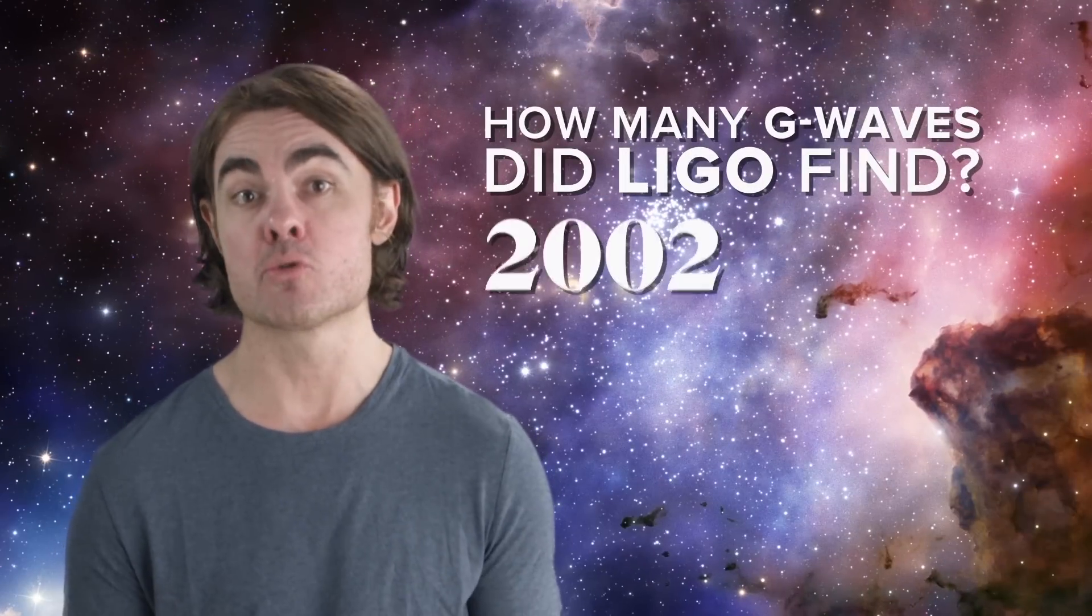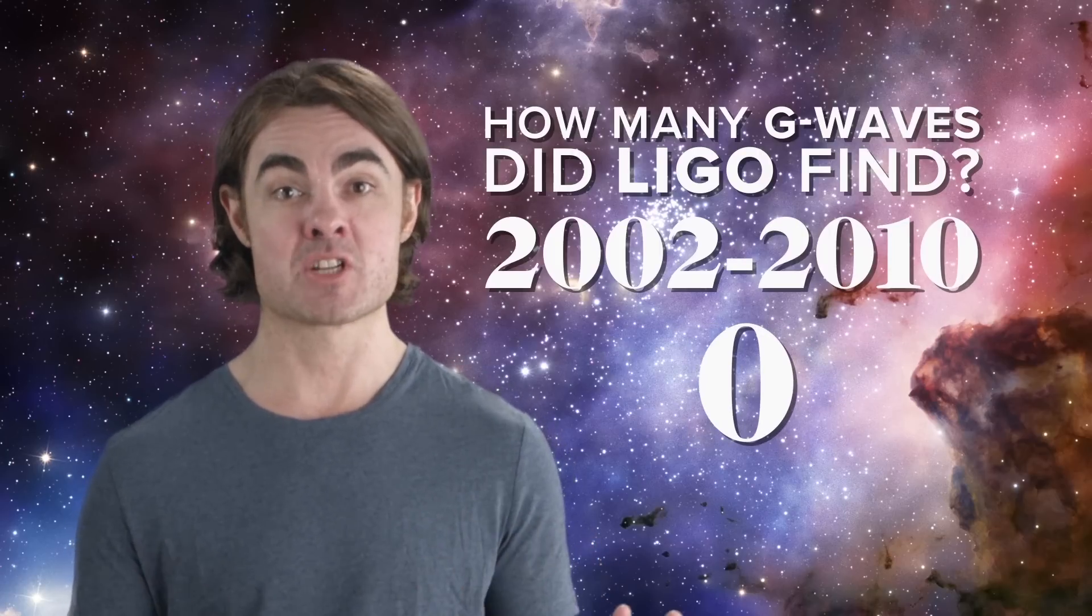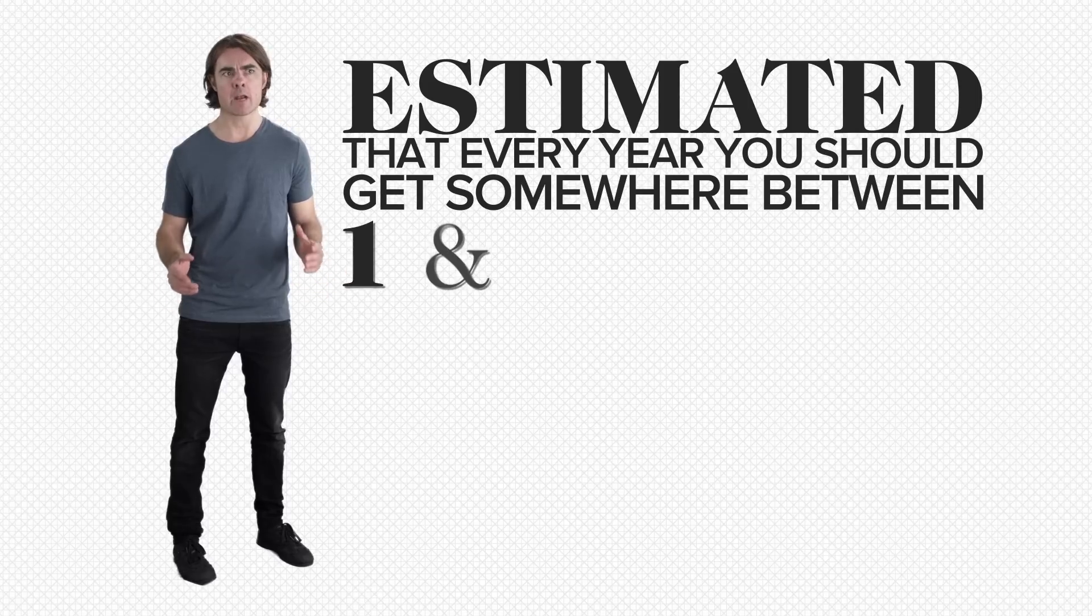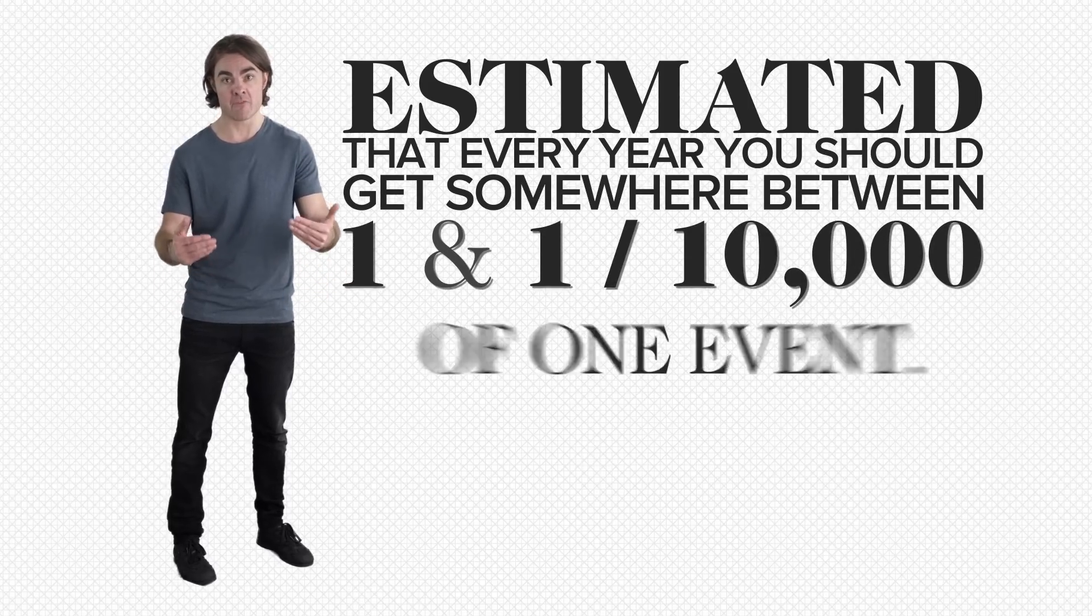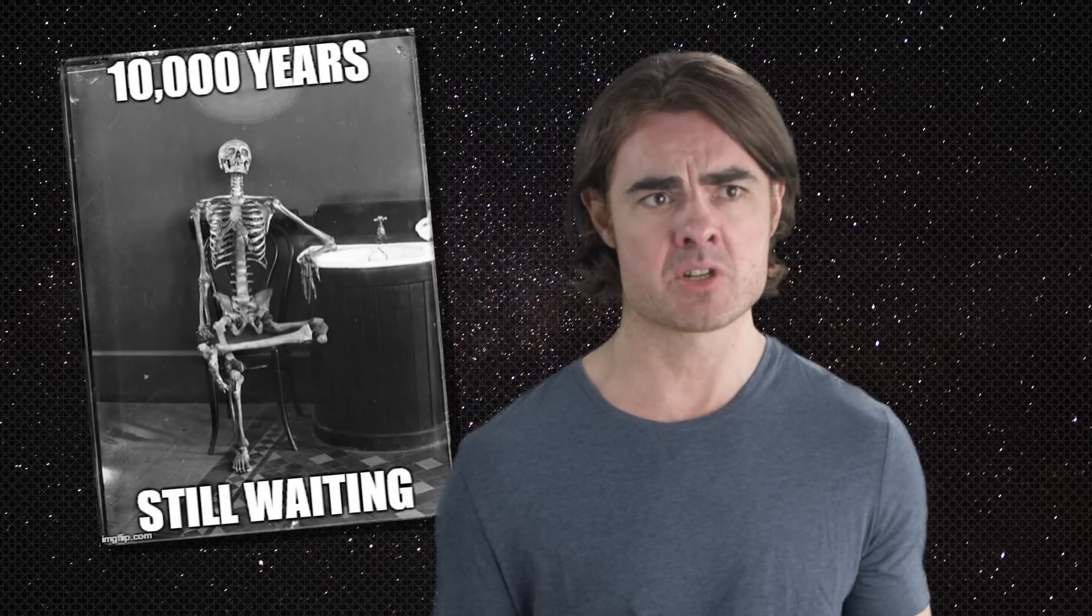So how many G waves did LIGO find? Well, between 2002 and 2010 when it ran, it found zero. No gravitational waves at all. This isn't necessarily so surprising. LIGO really just scratched the minimum sensitivity needed to spot merging neutron stars and black holes in relatively nearby galaxies. Based on astrophysical estimates of the number of these events, it was calculated that every year you should get somewhere between one and one 10,000th of one event. So best case scenario, we see eight events total. Worst case, we have to wait 10,000 years to see one. I guess it was somewhere in between, which still turned out to be zero.